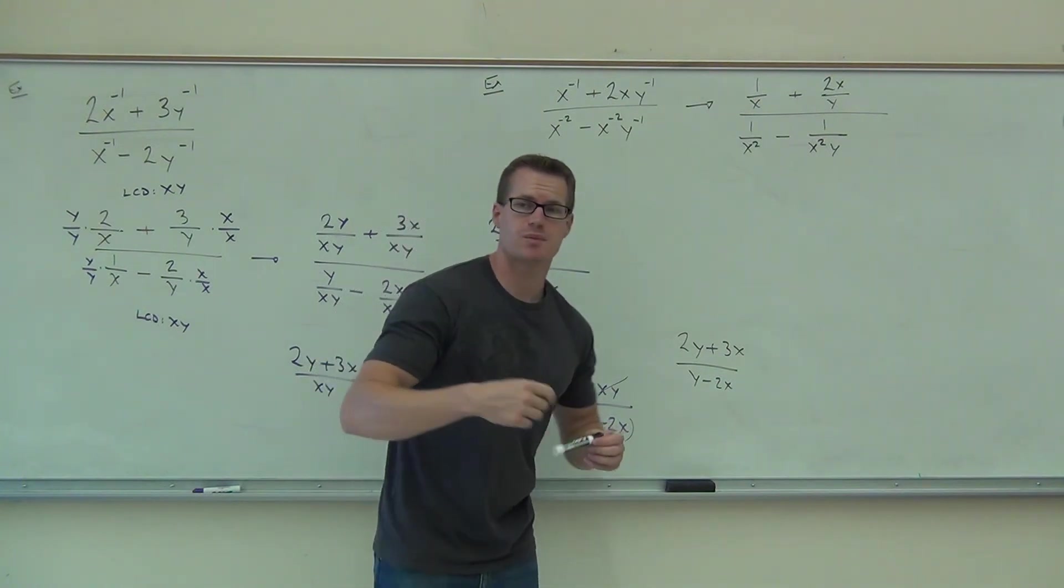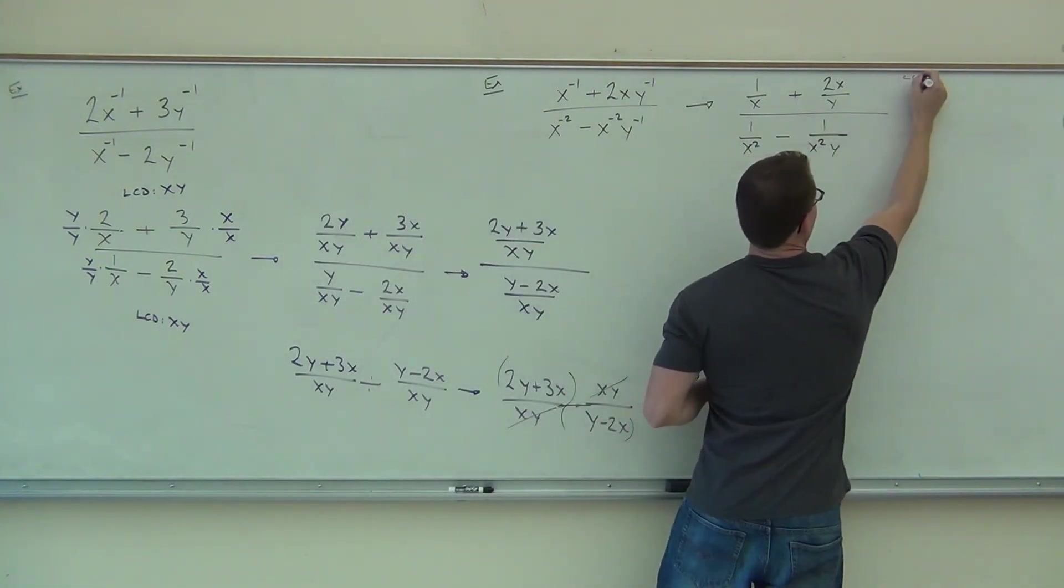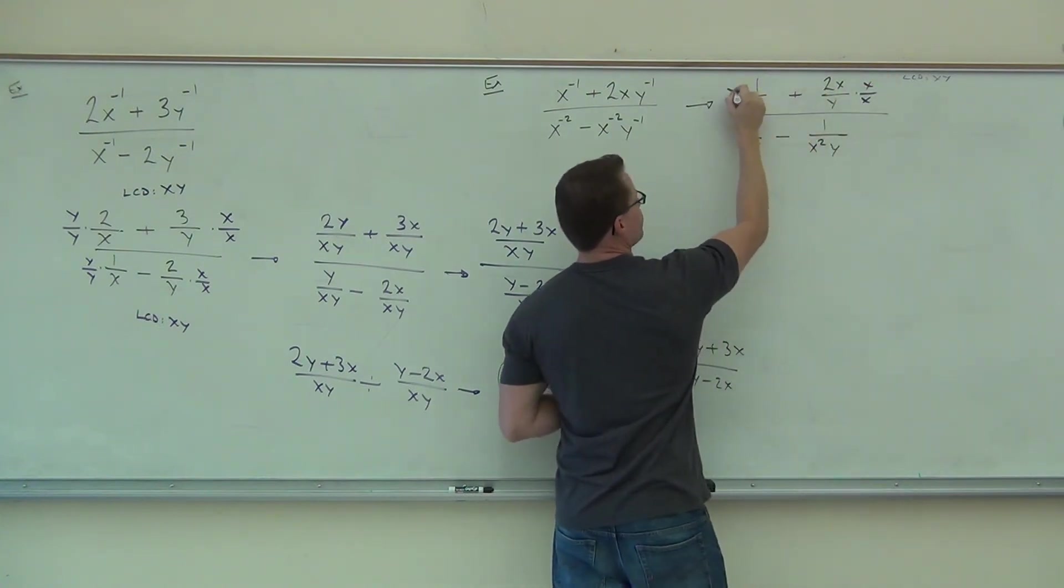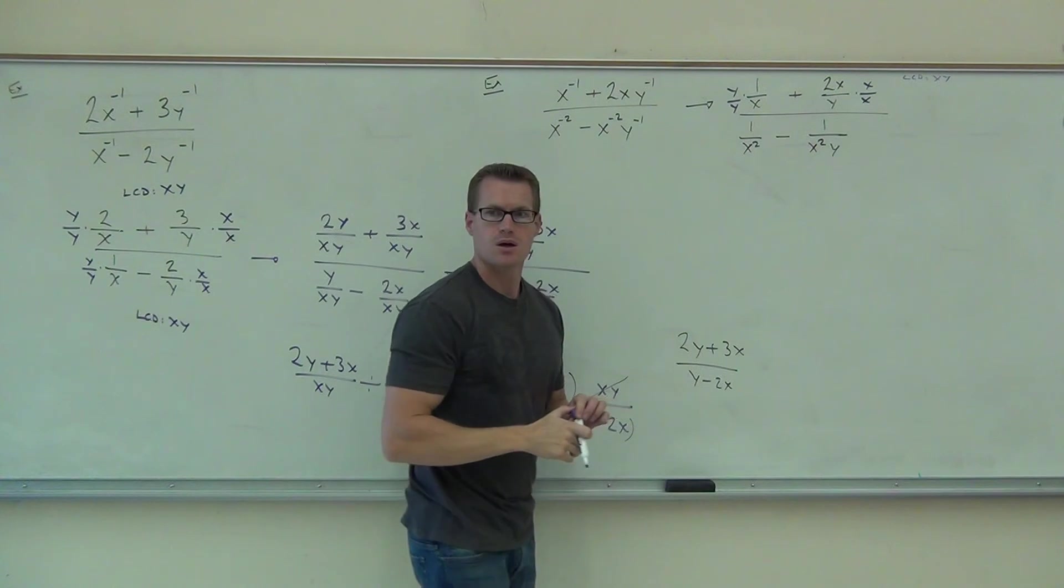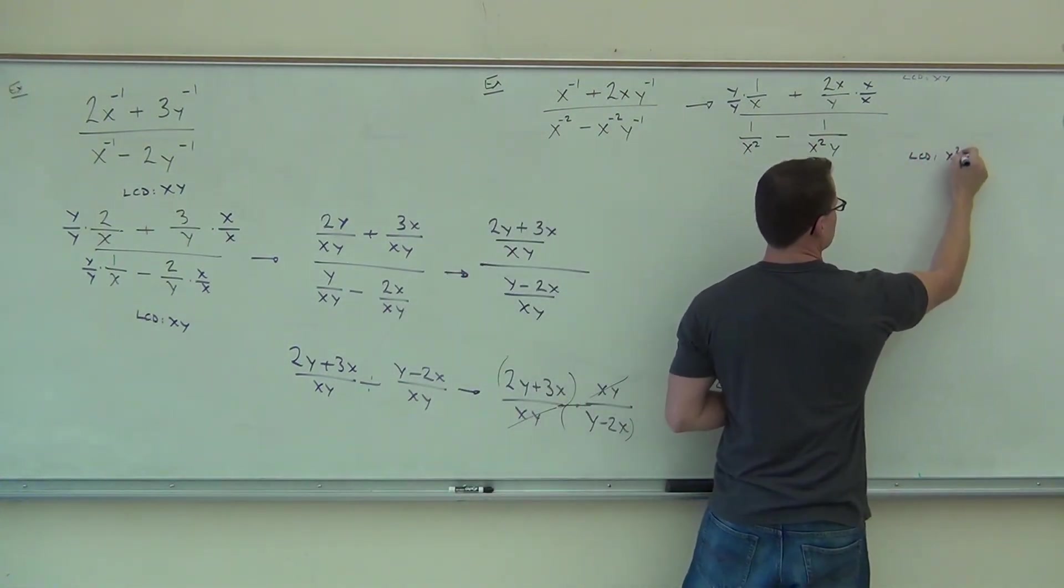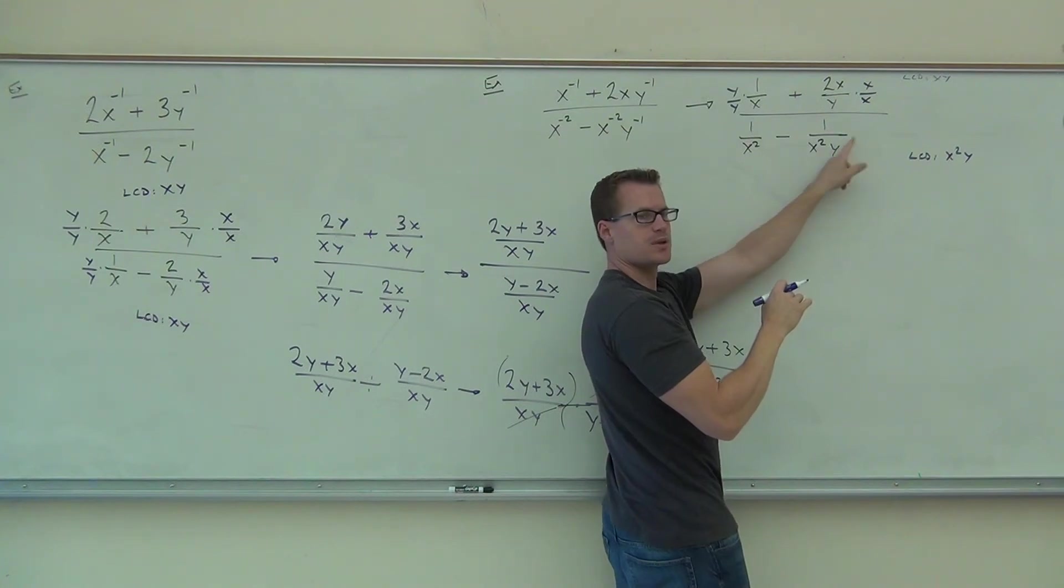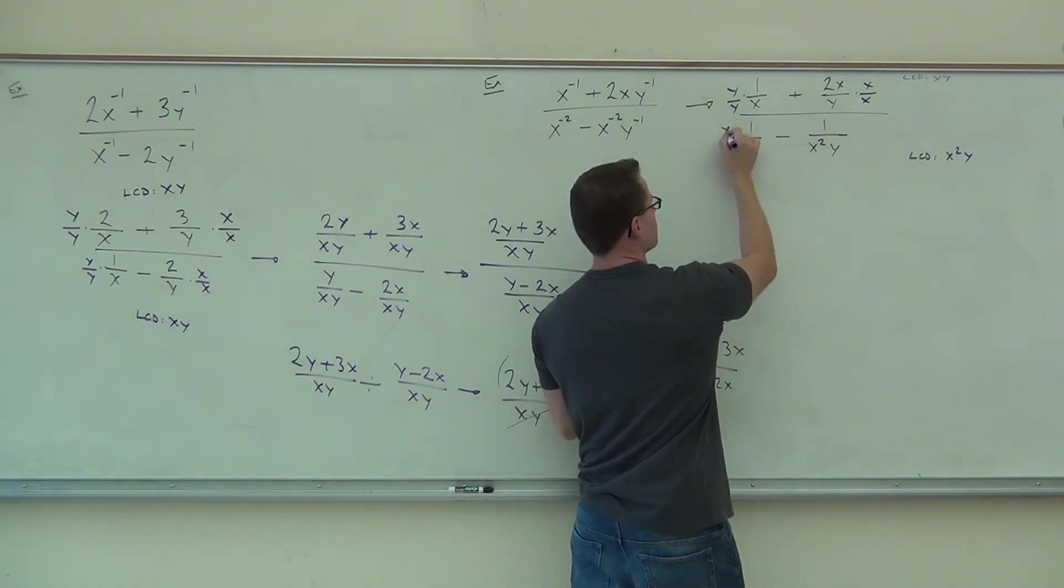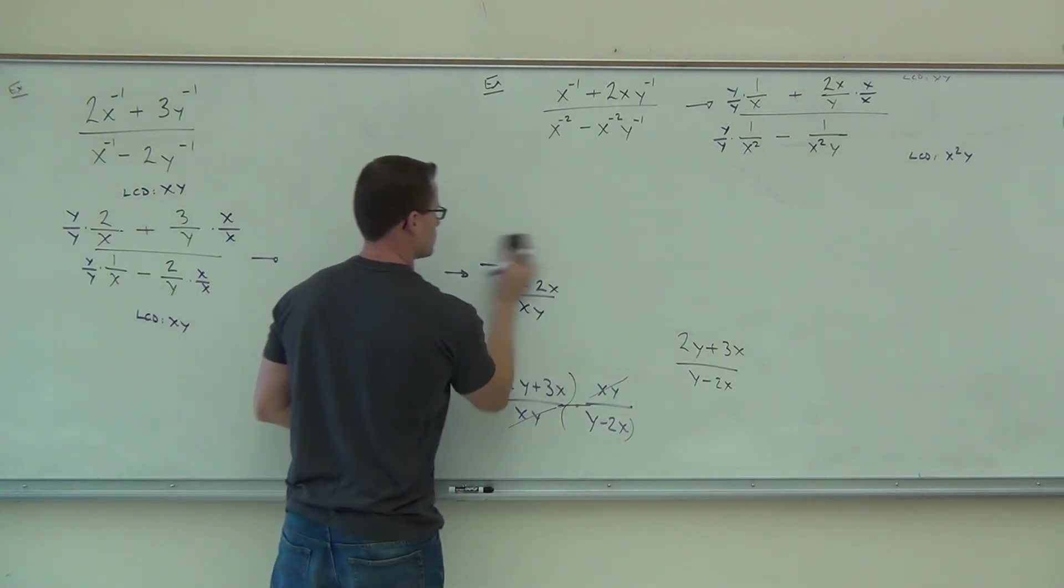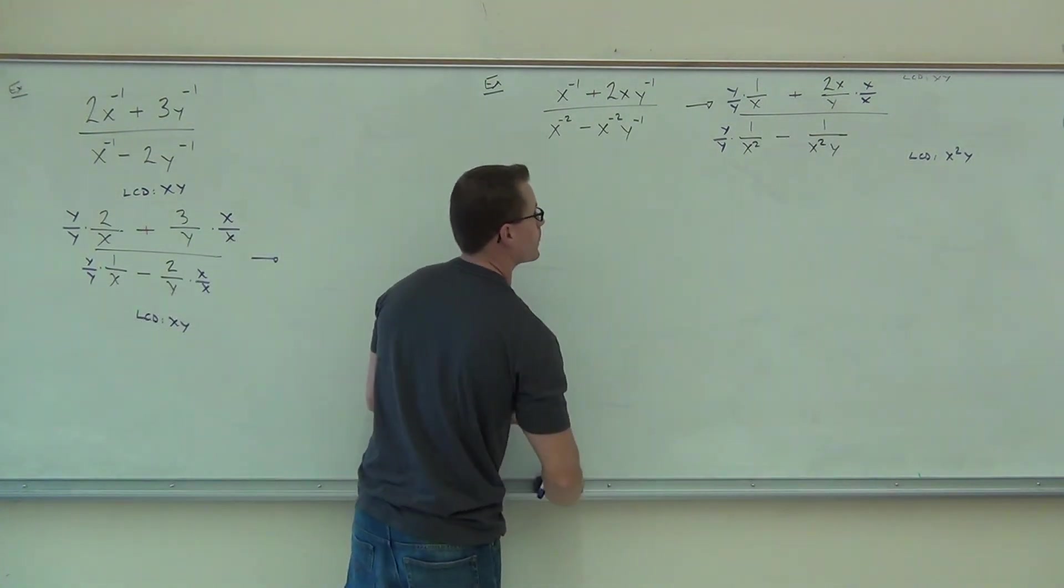Let's move quickly through the rest of it because we've done it before. The LCD for the top, ladies and gentlemen, what do you have? XY. We'll multiply this by x over x. We'll multiply this by y over y. So far so good? What do you have LCD for the denominator? x squared y. Good, because this x squared is already included. That's great. I don't need to multiply this one by anything. I multiply this one by what? Y.